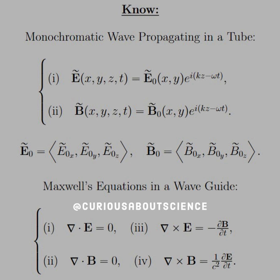We're dealing with waveguides, so we have an exponential form where the coefficient is a vector. Each component depends on the direction of the guided wave — we have E-naught-x, E-naught-y, E-naught-z, and the same for B. Maxwell's equations in a waveguide have no charge and no current, so we have: divergence of E equals zero, curl of E equals negative dB/dt (Faraday's law), and curl of B equals (1/c²) dE/dt (Ampere-Maxwell).